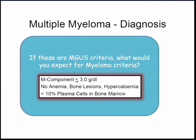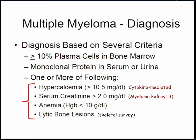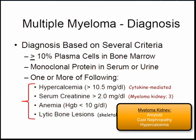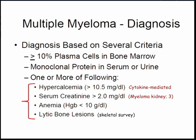If these are the criteria for MGUS, what are the criteria for myeloma? A lot of plasma cells, a high monoclonal protein — a high monoclonal spike, usually greater than three grams — plus one or more of the following: hypercalcemia, kidney disease, normochromic normocytic anemia, and lytic bone lesions as assessed by skeletal survey.